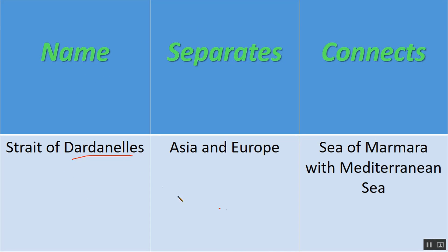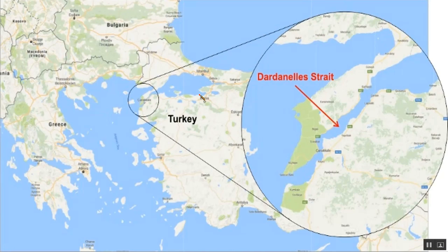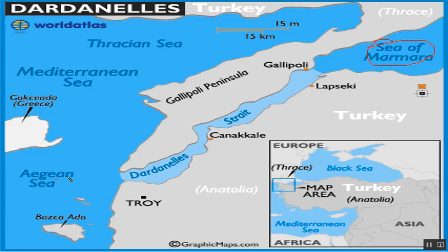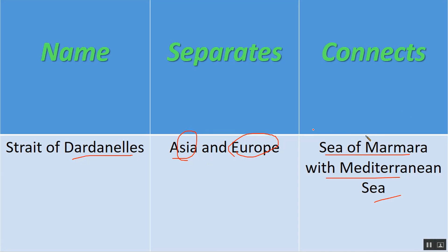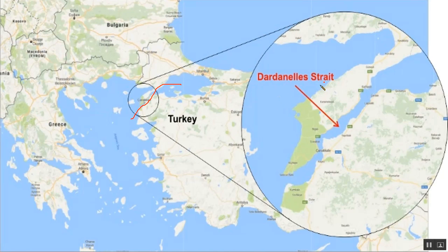The Strait of Dardanelles also separates Asia from Europe and connects the Sea of Marmara with the Mediterranean Sea. On the map, here is the Dardanelles Strait connecting the Sea of Marmara with the Mediterranean Sea, with this region being Asia and this region being Europe.